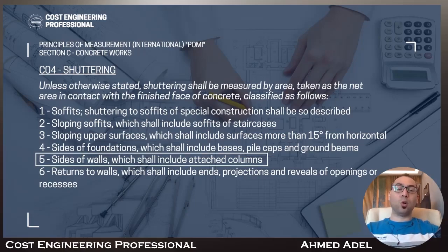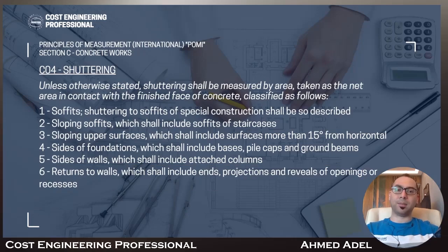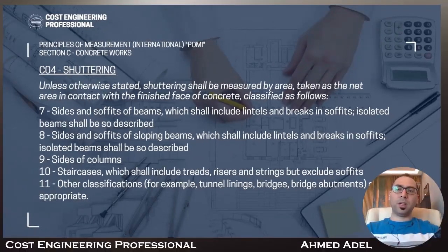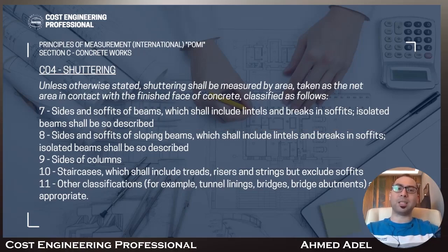Number five: sides of walls, which shall include attached columns. Number six: returns to walls, which shall include ends, projections, and reveals of openings or recesses. Number seven: sides and soffits of beams, which shall include lintels and breaks in soffits. Isolated beams shall be so described — if you have an isolated beam, you must state that this formwork is for an isolated beam.